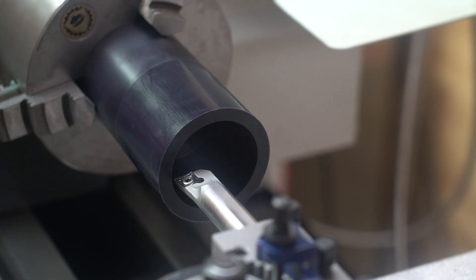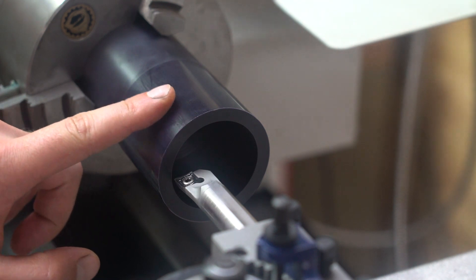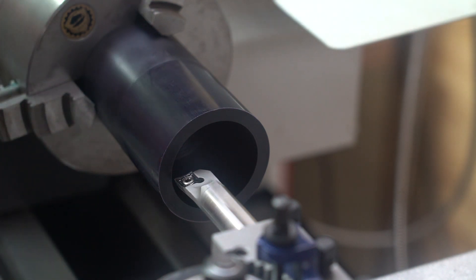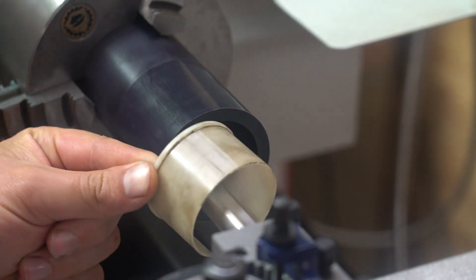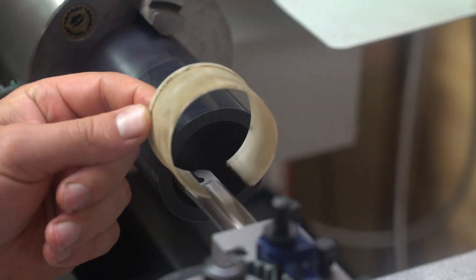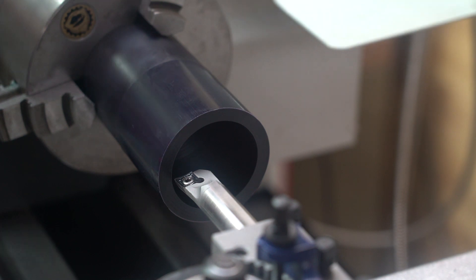So now that I've got it bored out to the right size, I'm going to turn down the outside diameter until I can produce this lip on the plastic bushing that keeps it inside the variable speed disc.